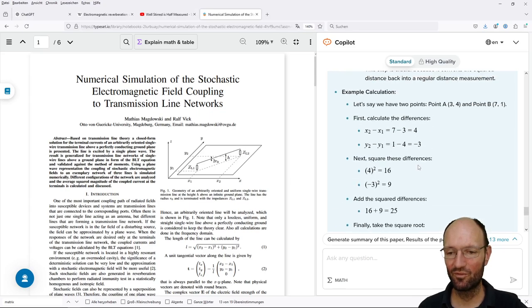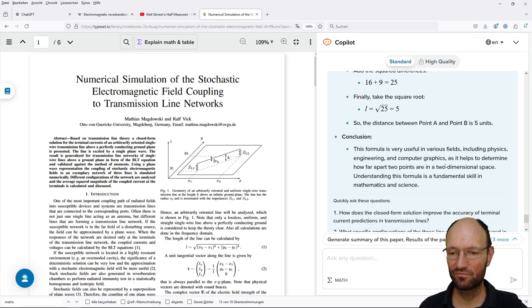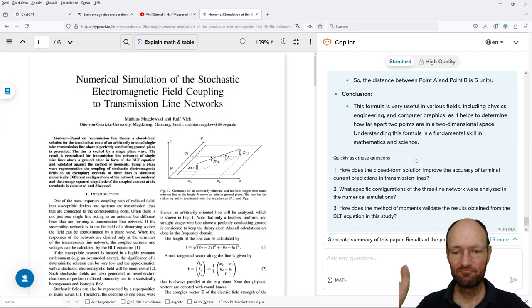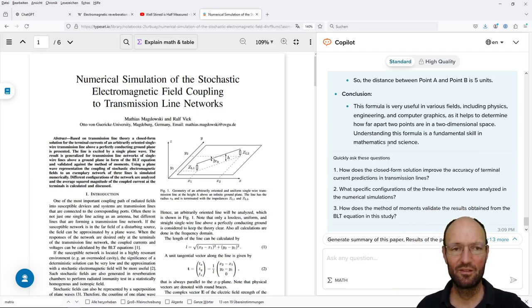Example calculation: if we have seven and three and one and four, you get 25 and distance will be five, five units. I'm not sure why it does not mention that this is the Pythagoras theorem.